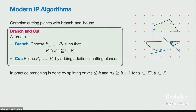In practice, branching is done by splitting on an integer linear inequality: we pick a linear form ax and branch on whether ax ≥ B or ax ≤ B−1, where a and B are integral. In practice this is often standard DPLL branching, which in this geometric setting corresponds to picking a variable and branching on whether it equals 0 or 1.